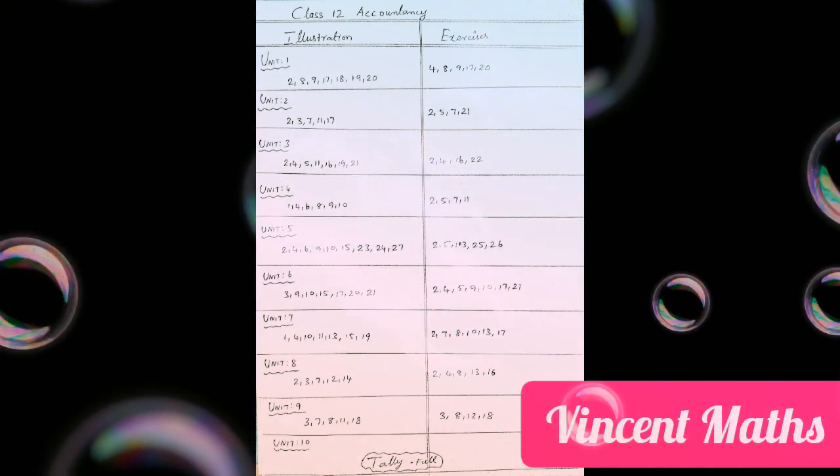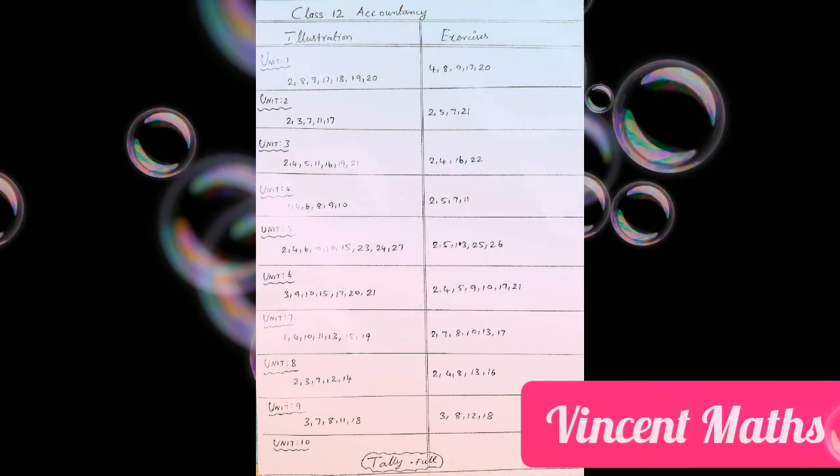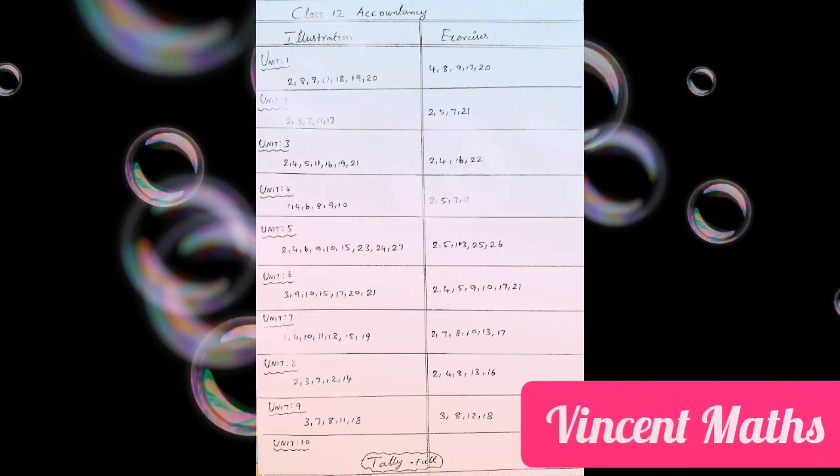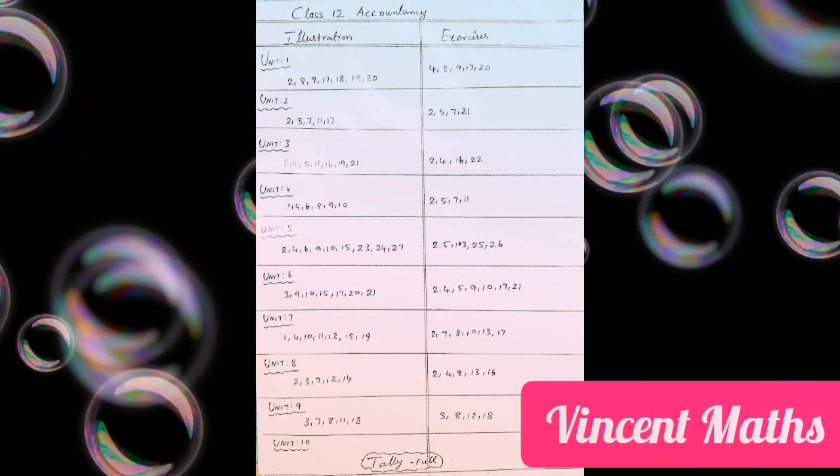The important sums are: 3rd, 9th, 10th, 15th, 17th, and 27th sum.